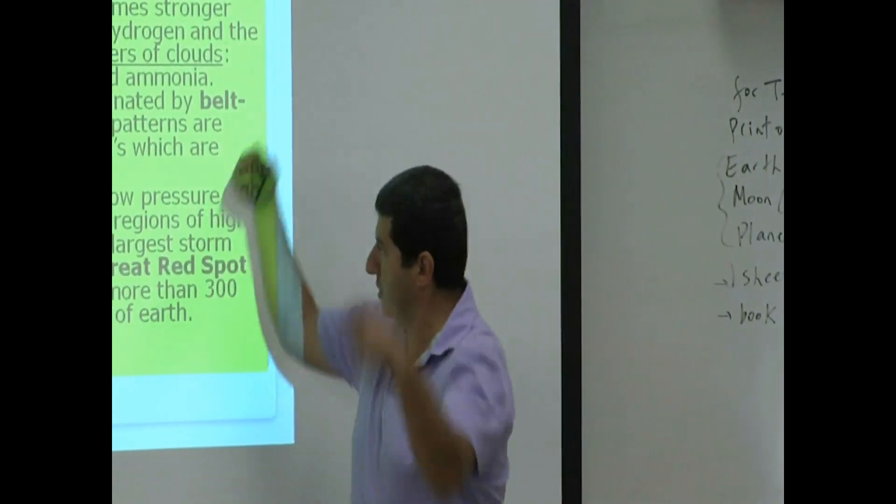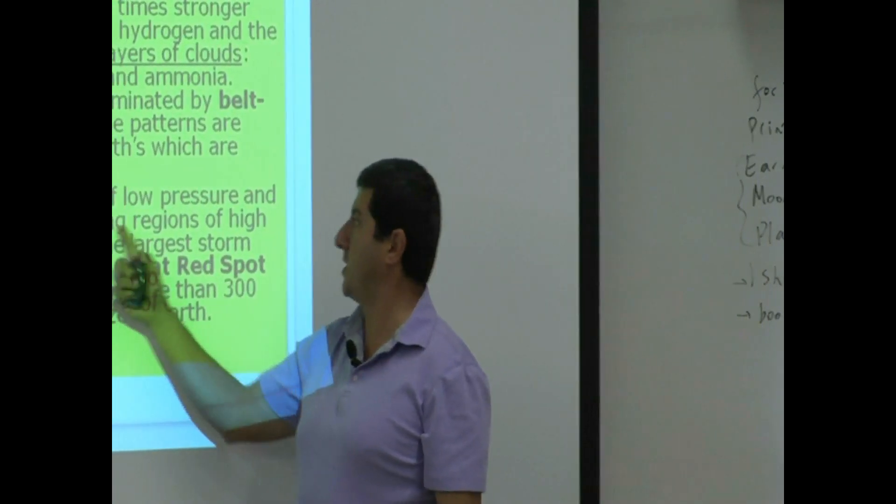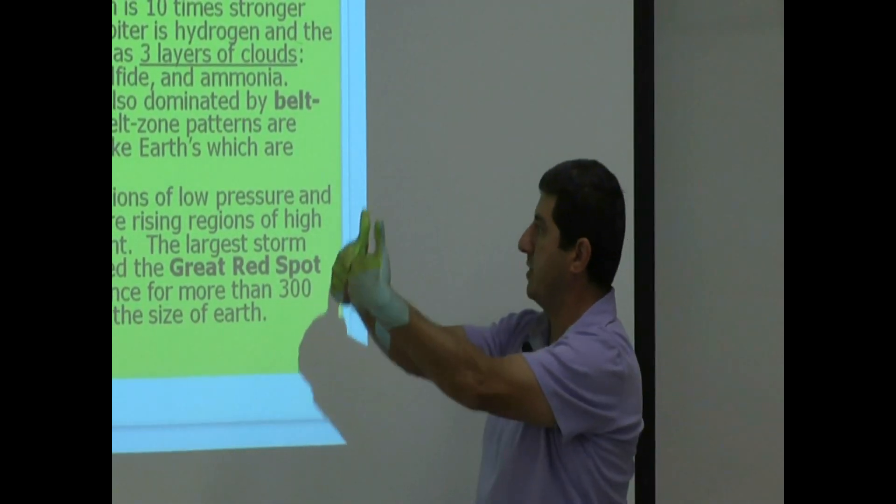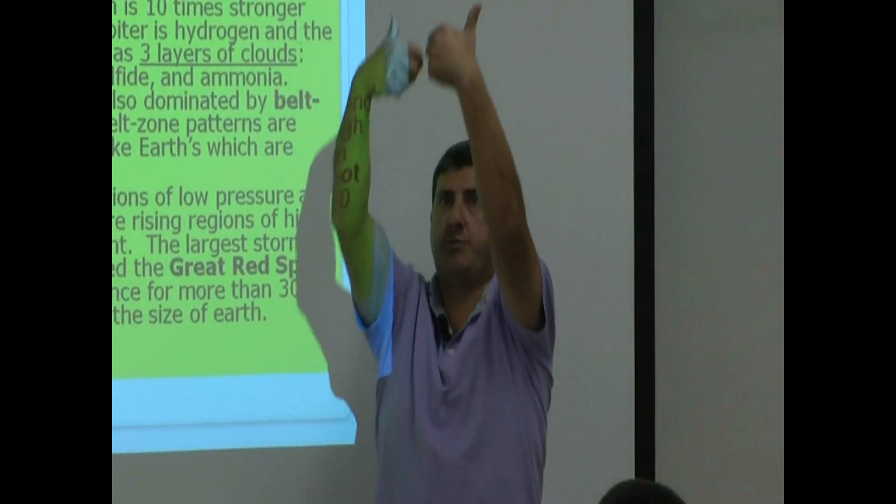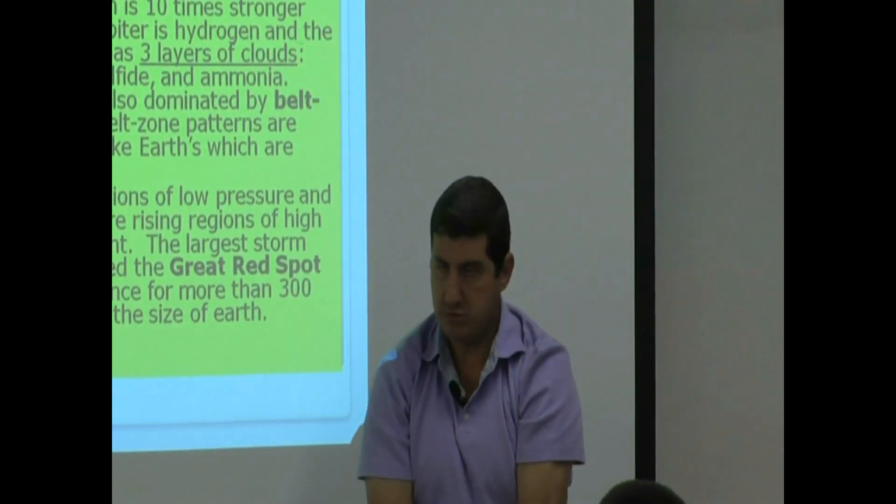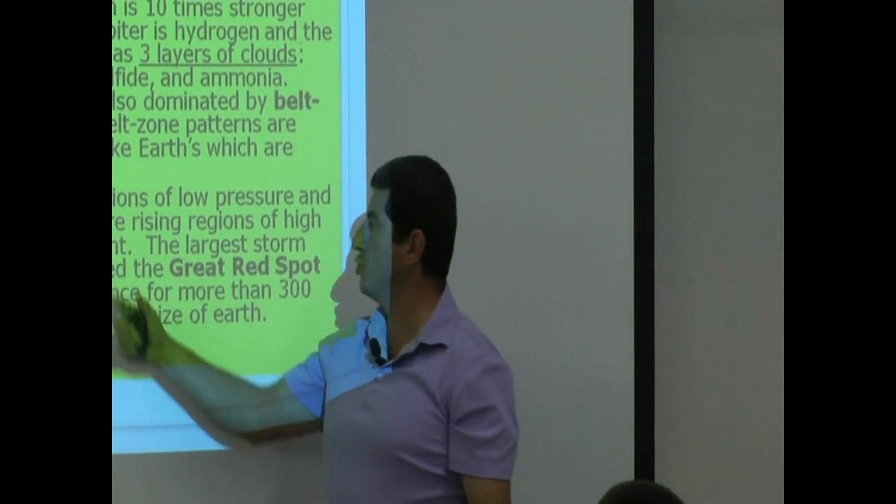Sinking region of low pressure, it's going down. Zones are rising regions, it's going up, of high pressure. So the high pressure goes up, low pressure goes down. And the zones look bright.